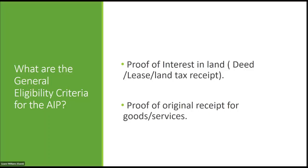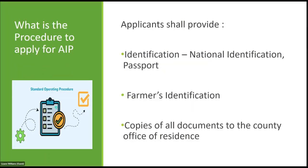What is the procedure for applying for AIP? Applicants shall provide identification — national identification or passport, and farmers identification. They must bring copies of all documents to the county office in which they reside. It is important to note that applications are done where the person resides, and not where the parcel of land is located. Proof of interest in land documents and proof of interest on other property documents are also required.